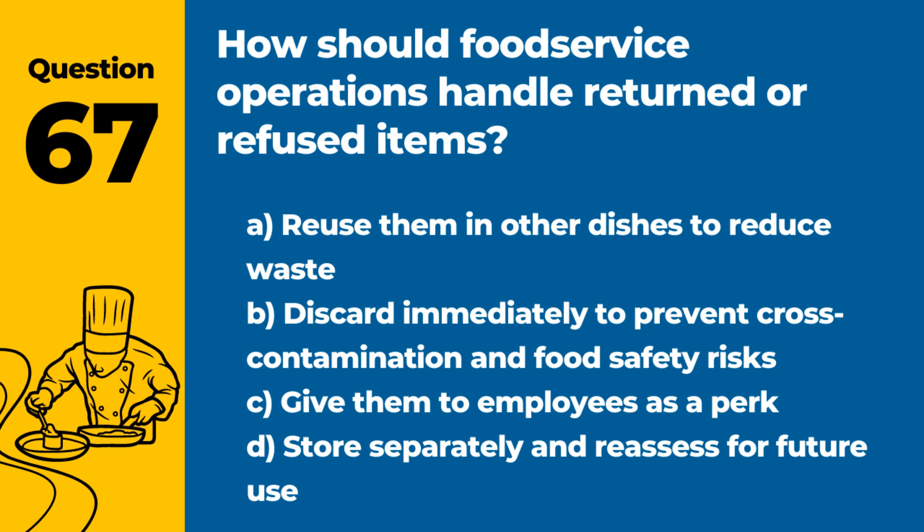Question 67. How should food service operations handle returned or refused items? Answer: B. Discard immediately to prevent cross-contamination and food safety risks. Safety and quality assurance protocols necessitate disposing of these items properly.